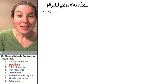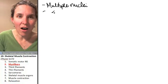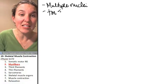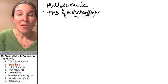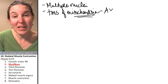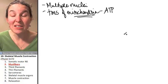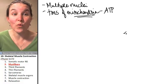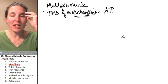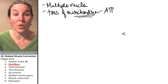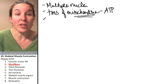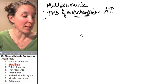Skeletal muscle cells also have tons of mitochondria. Why? Mitochondria make your ATP, and so you need lots of them to fuel muscle cell contraction. You have an intuitive sense that it takes energy to contract muscle cells, so we've got to have mitochondria in order to fuel that process.